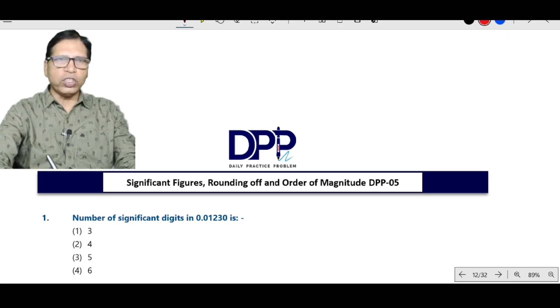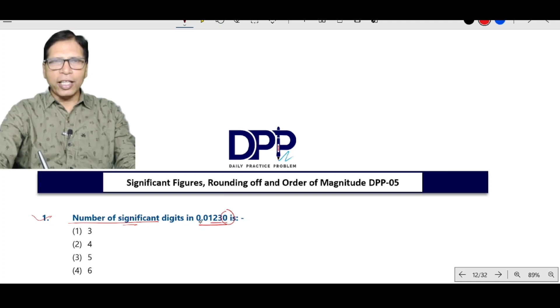Look at question number one, the number of significant figures in this. Zero after the decimal point is significant and nonzero digits are always significant. The zeros between the decimal point and nonzero digits are not significant. So, the number of significant figures is 4. Option two correct.